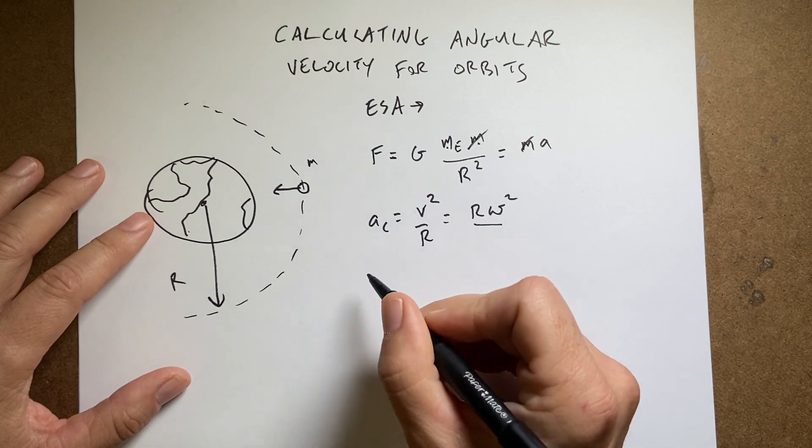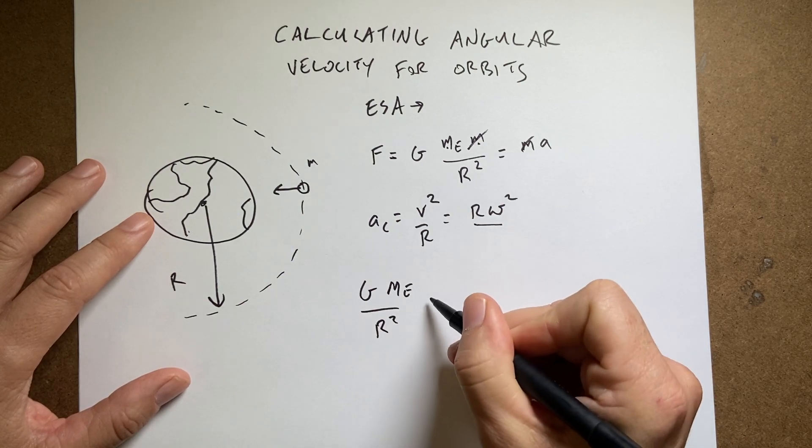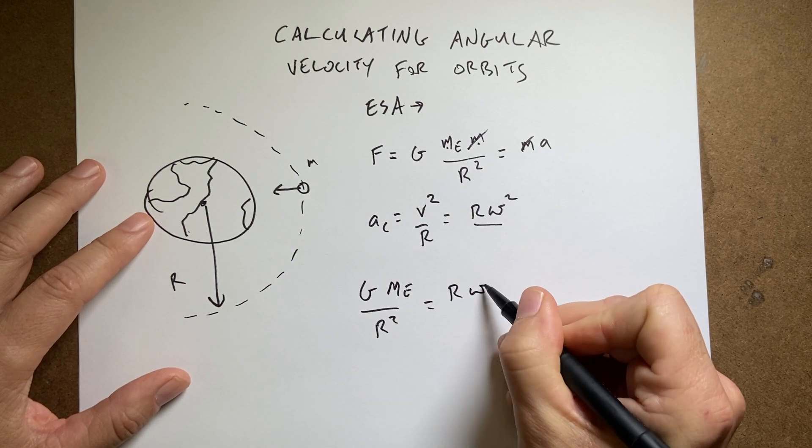So if I put these two things together, I get G mass of the Earth over r squared equals r omega squared.